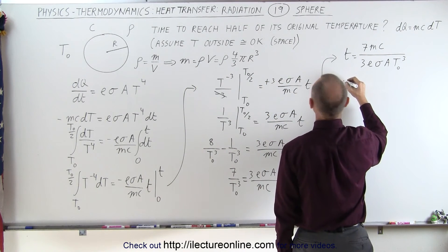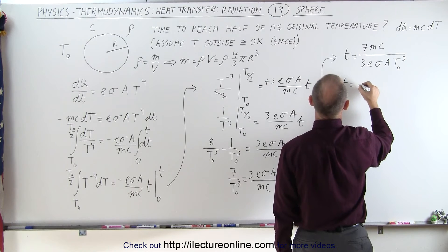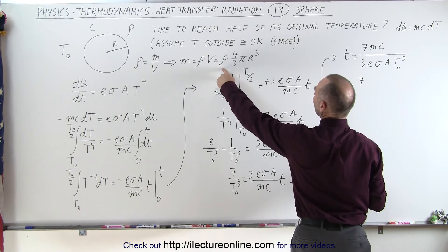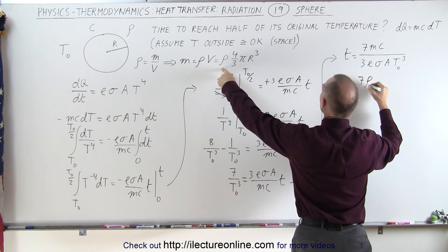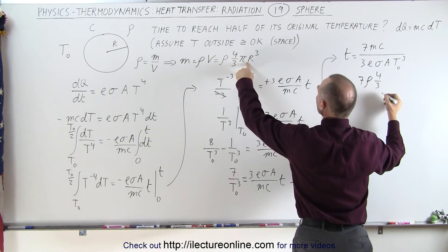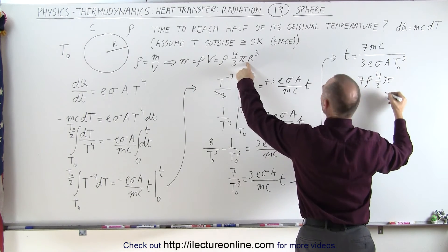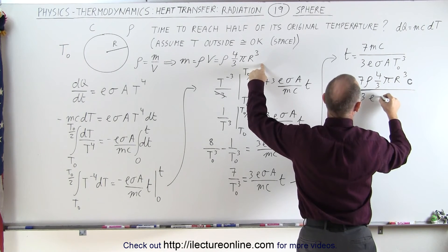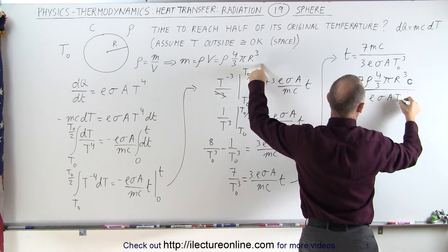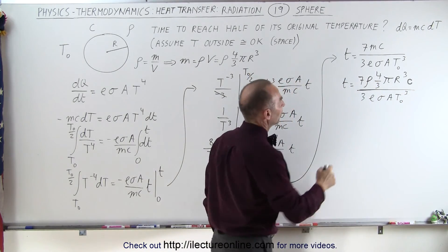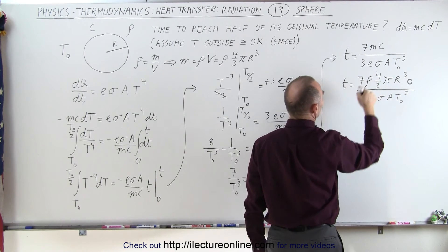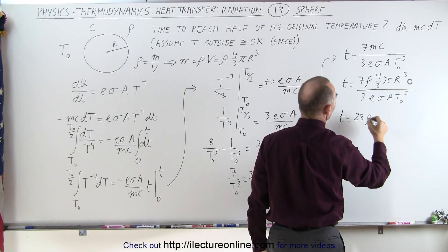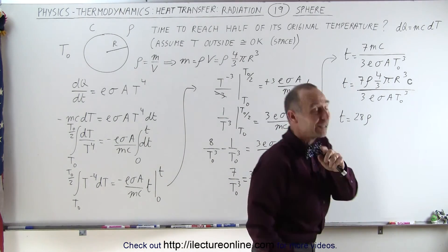Now we're going to replace m by this quantity. When we do that, we get time is equal to seven, instead of m we're going to write density four over three times pi times r cubed, all divided by three epsilon sigma A T initial to the third power. Then we bring this down, that becomes nine, this becomes 28.